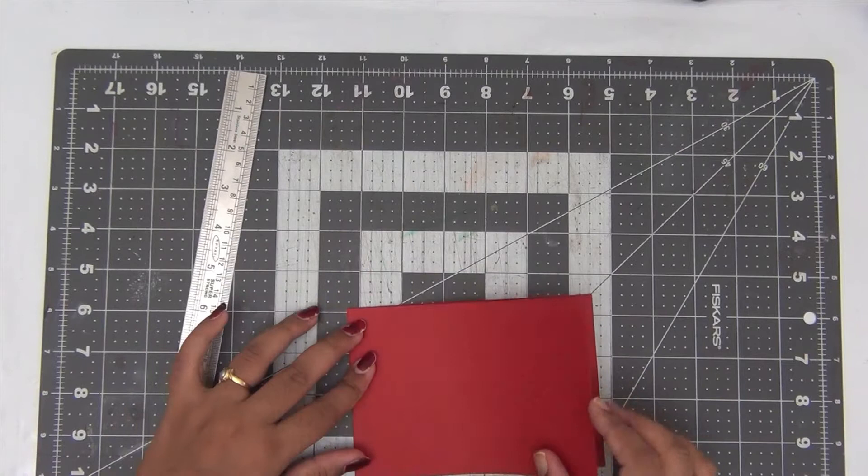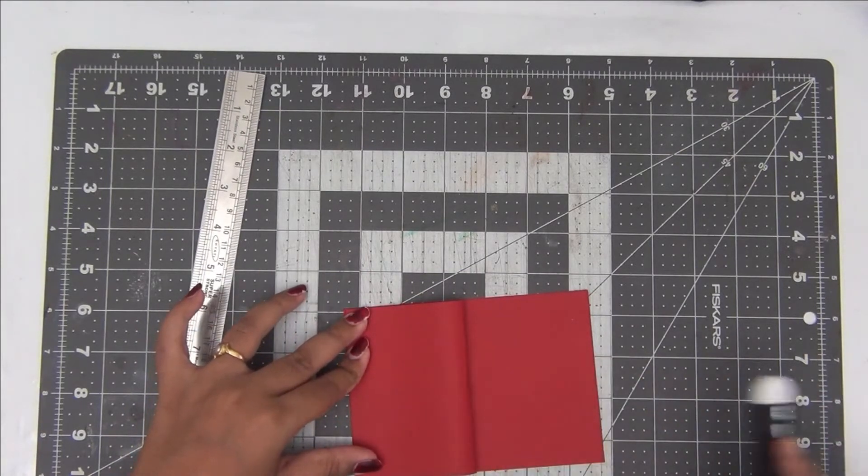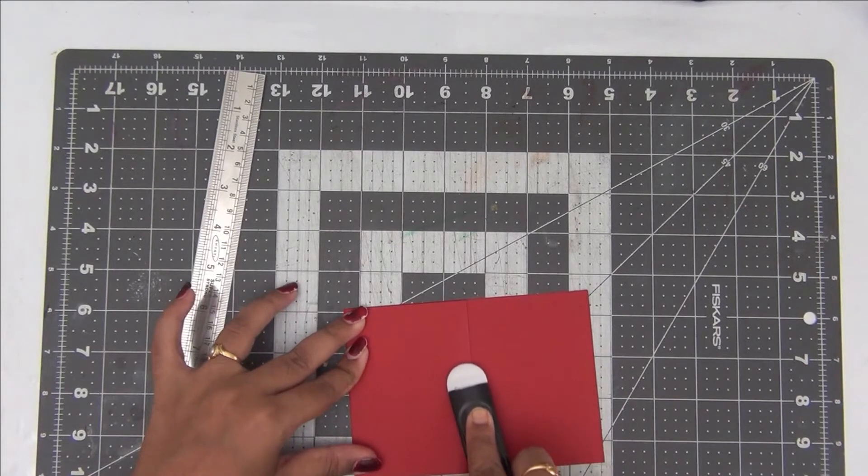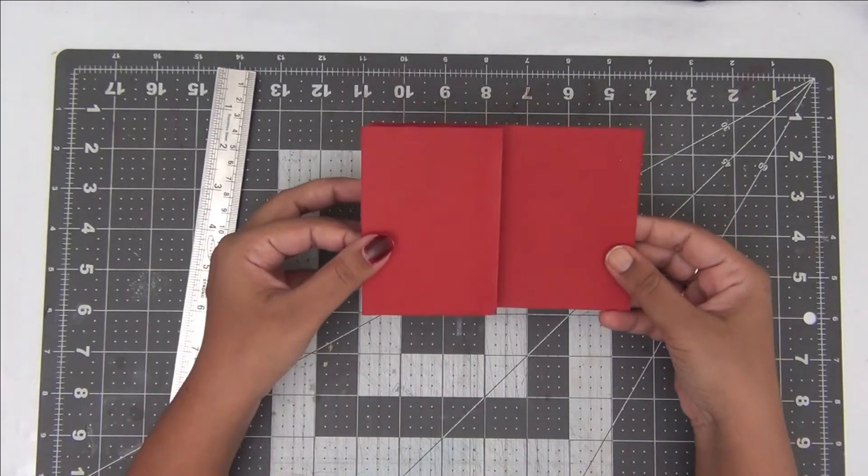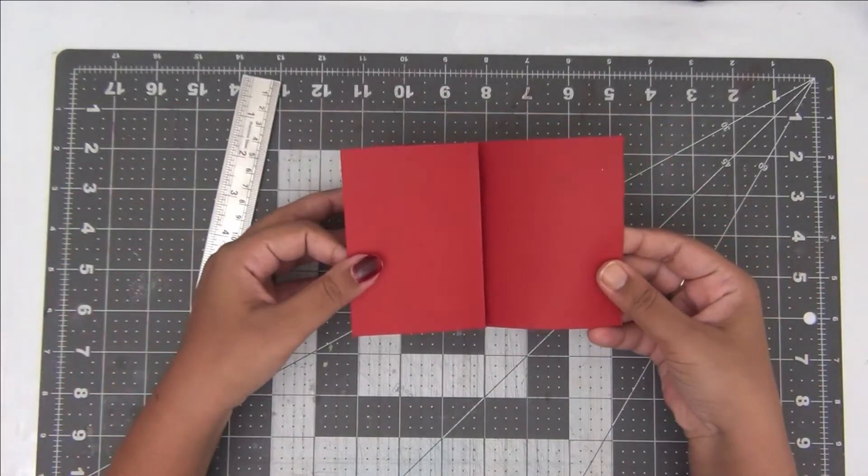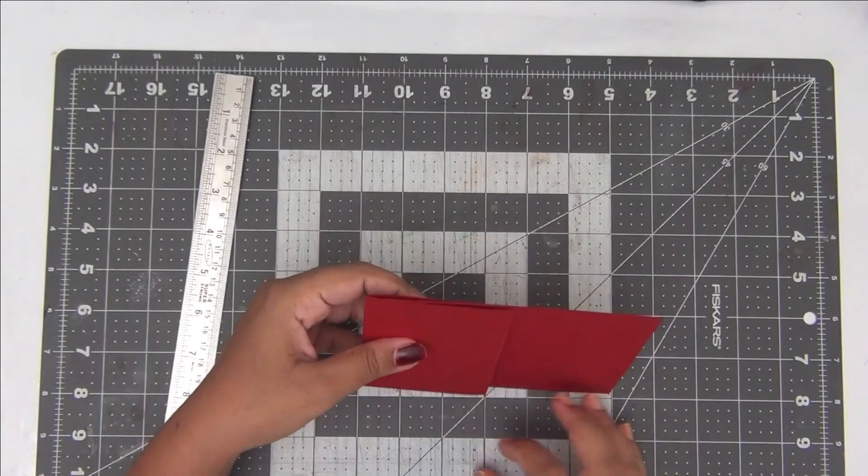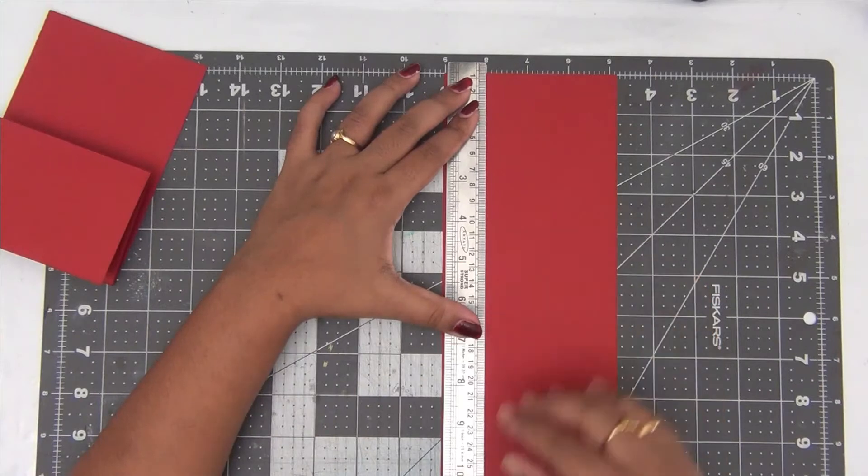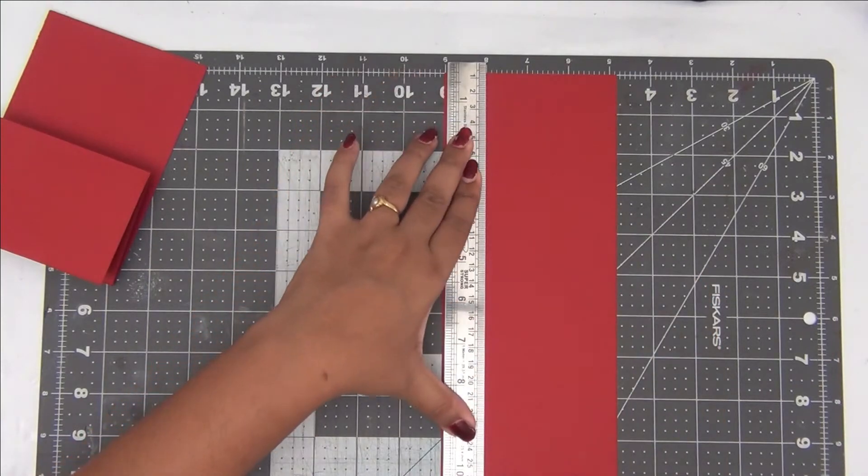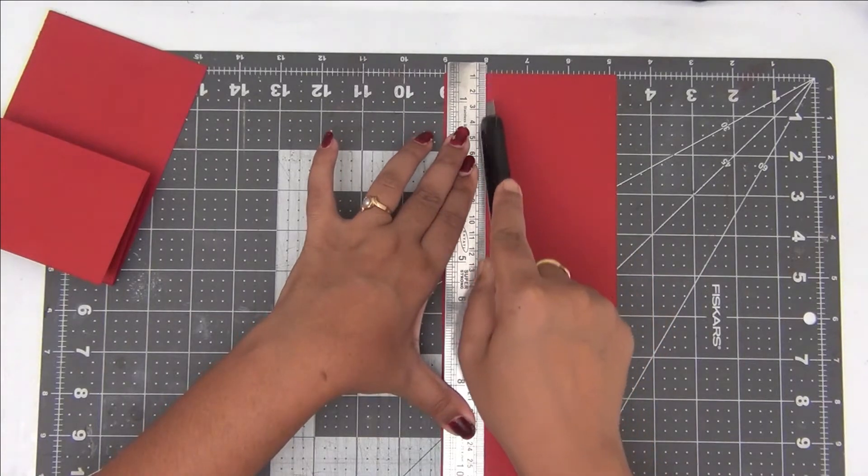I'm just taking a blunt object and then creasing the fold so that when my card opens it has crisp folds on it. Now I am taking one half of it and again folding it to half. You can see it very clearly in the video here. I am again creasing it properly, making sure all my folds are creased well.